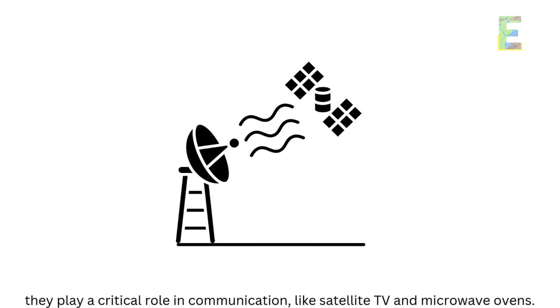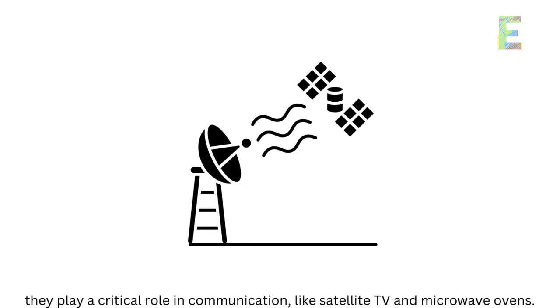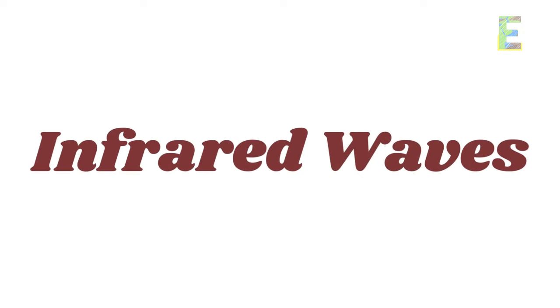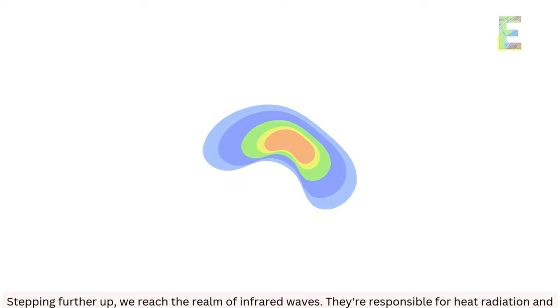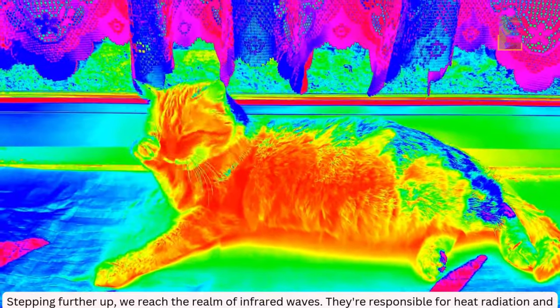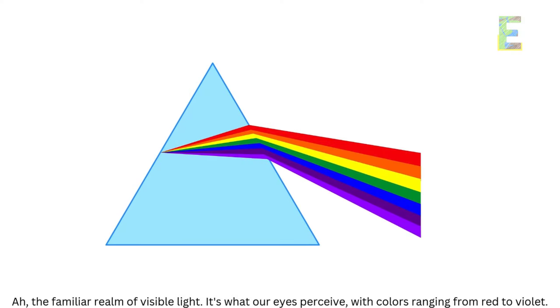Microwaves are not just for heating your leftovers — they play a critical role in communication, like satellite TV and microwave ovens. Stepping further up, we reach the realm of infrared waves. They're responsible for heat radiation and are used in night vision technology.